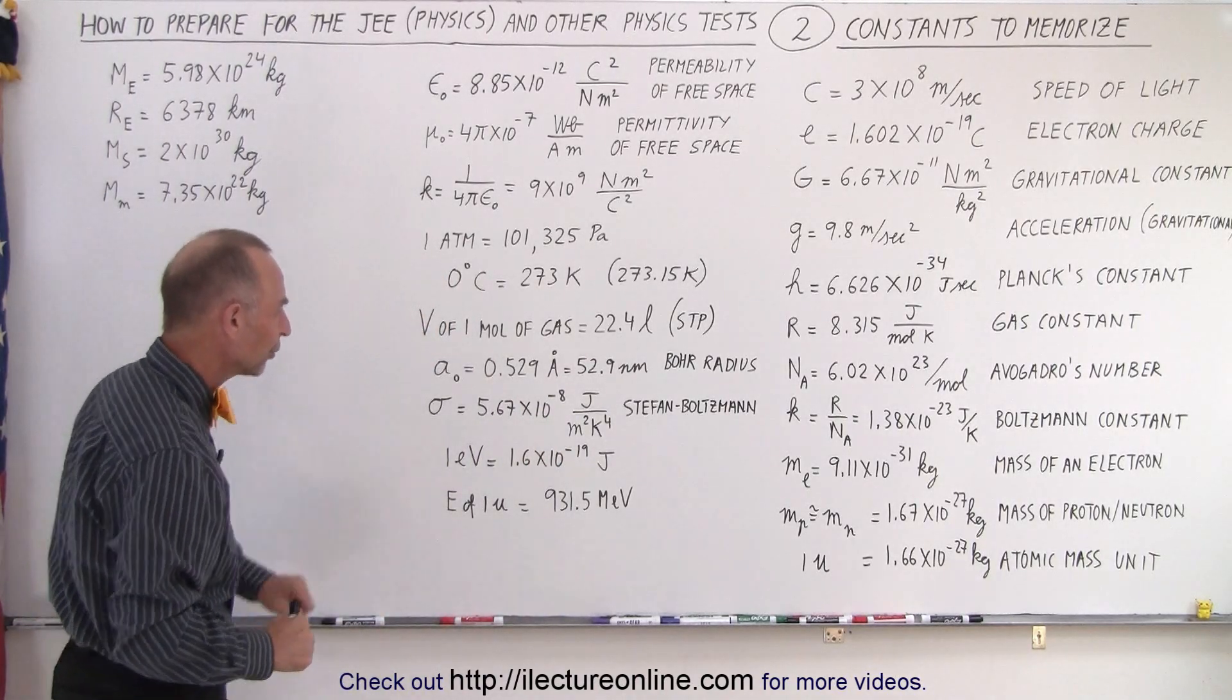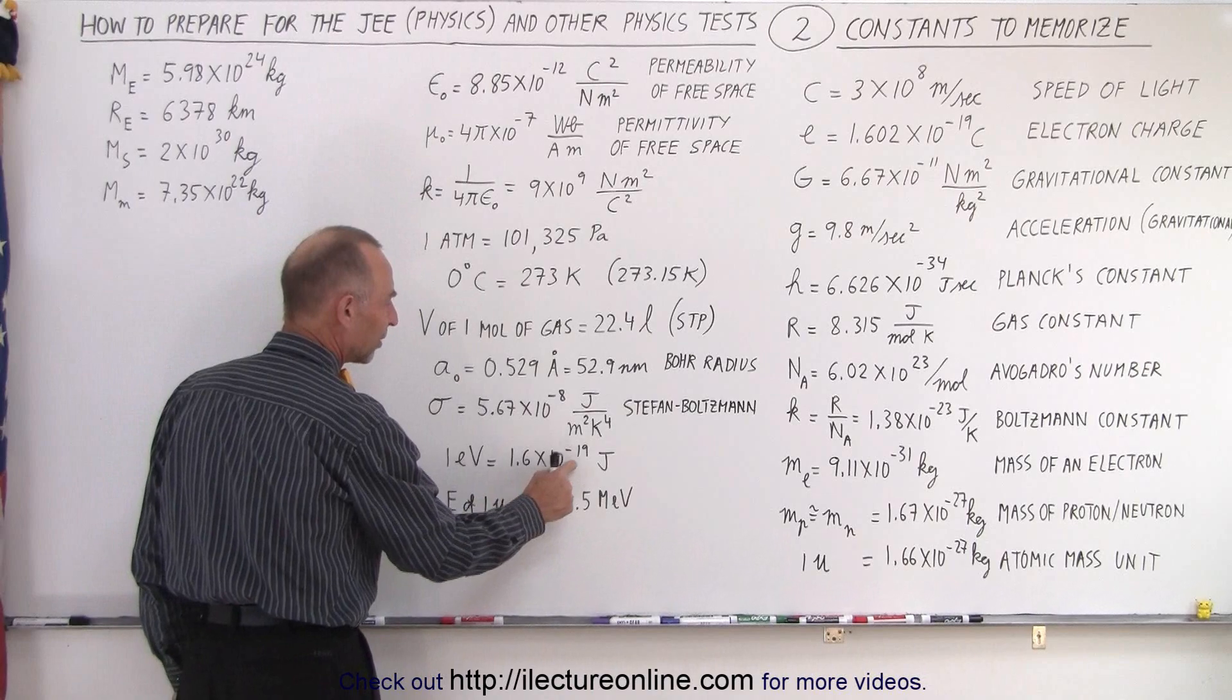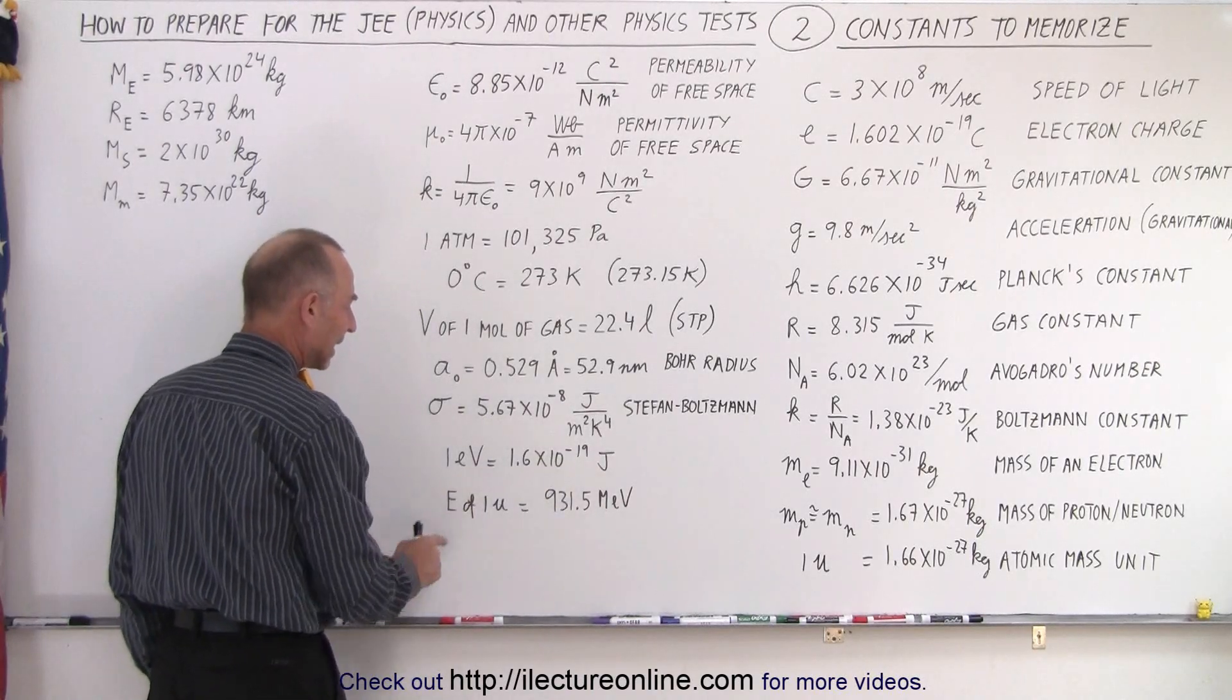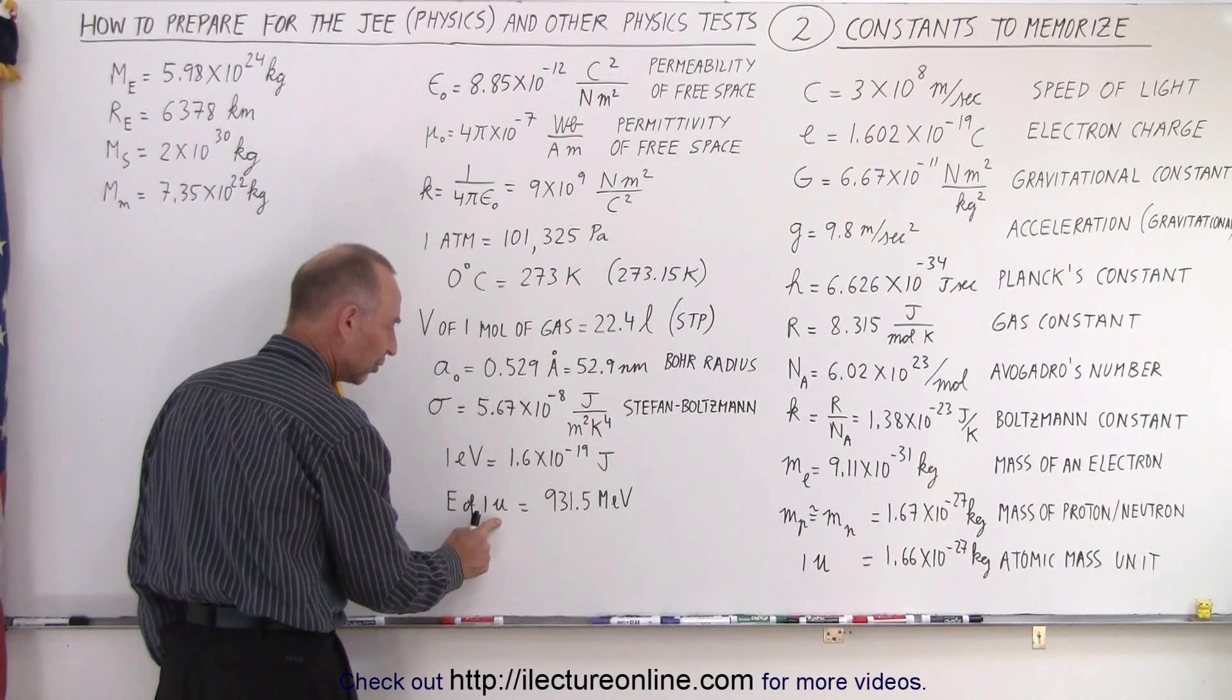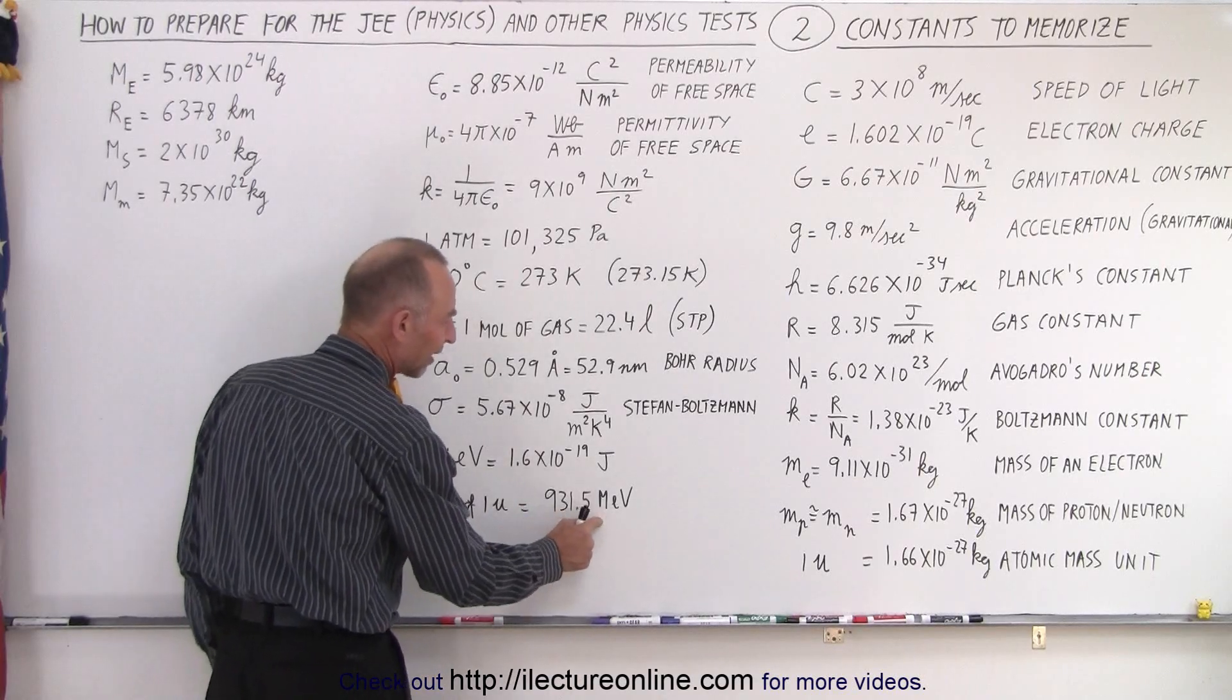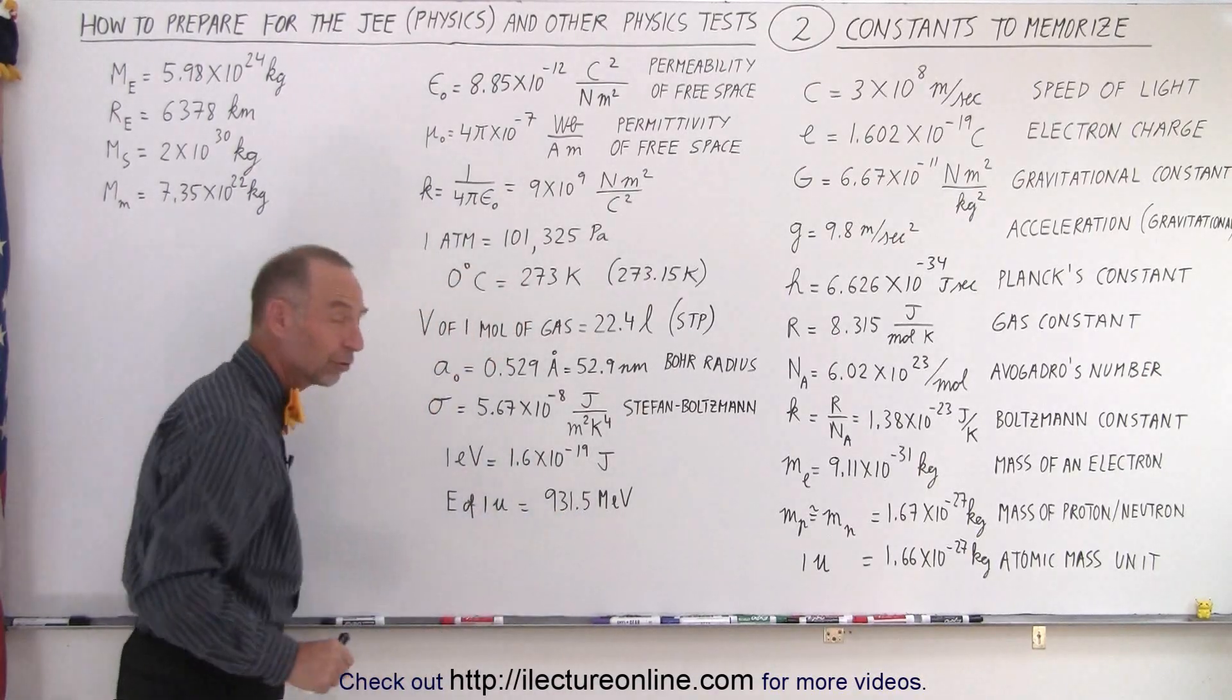One electron volt, equivalent to 1.6 times 10 to the minus 19 joules. And the energy equivalent of one atomic mass unit is 931.5 million electron volts.